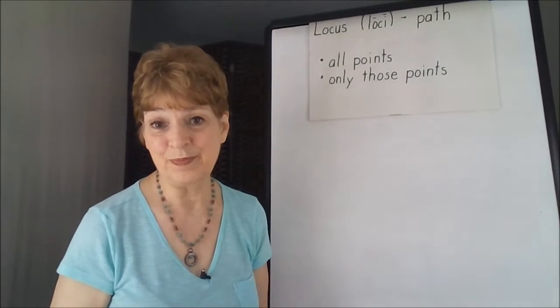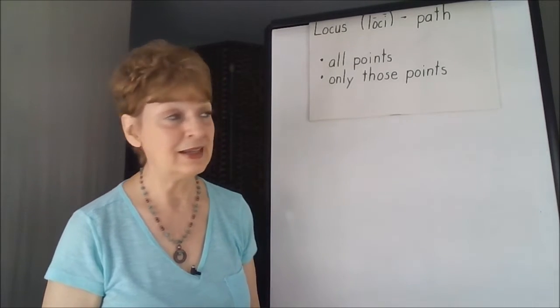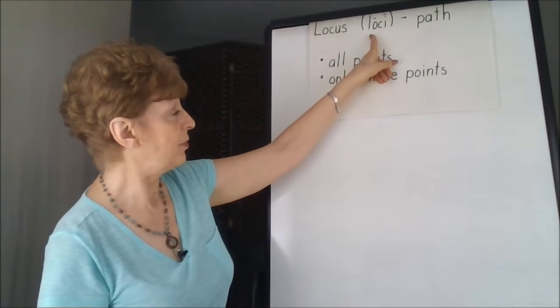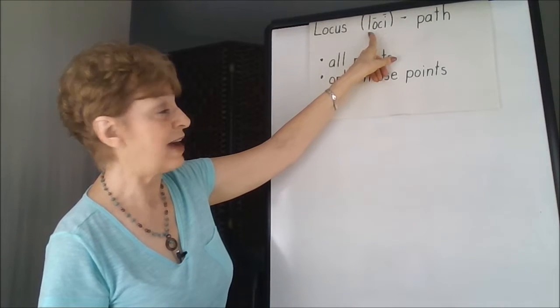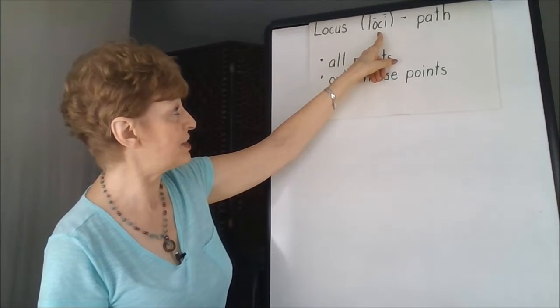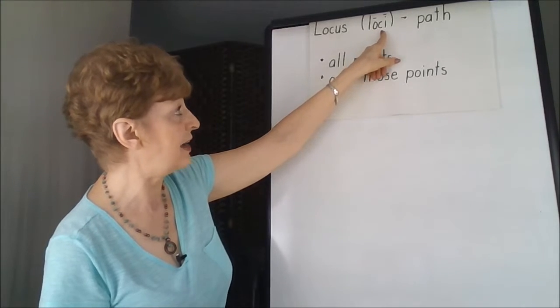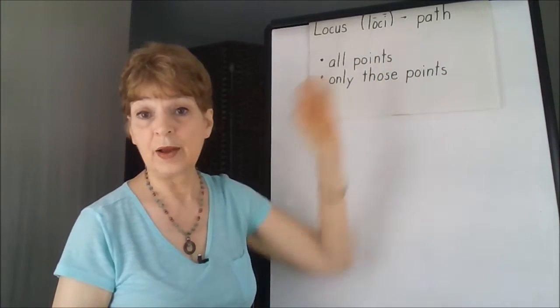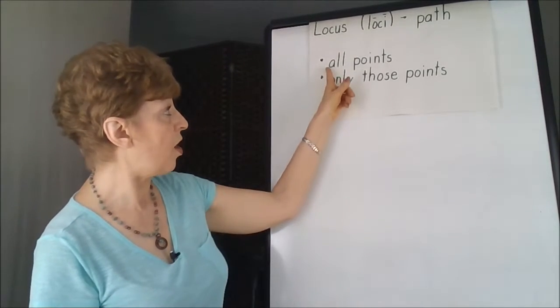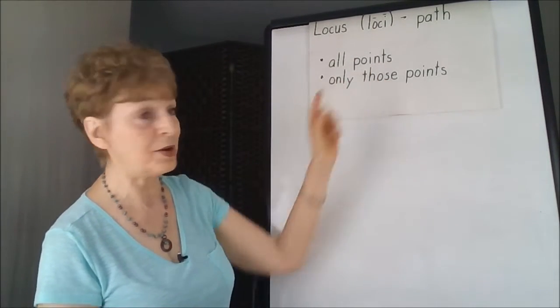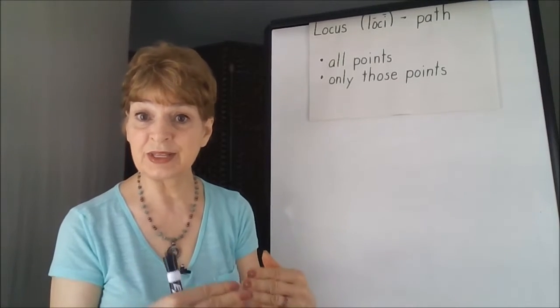Another concept that's basic to geometry is something called locus. The plural of the word is loci. I've marked the long vowels in there so the pronunciation is a little easier. Locus really means a path, and it's a path where all the points and only those points fit into this category.